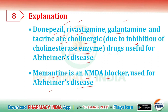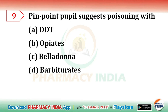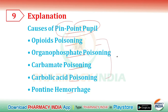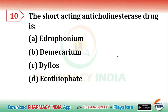Donepezil, rivastigmine, and galantamine are cholinergic drugs. Next question: pinpoint pupil suggests poisoning with — DDT, opiates, belladonna, or barbiturates? The correct answer is opiates. Causes of pinpoint pupil include opiate poisoning, organophosphate poisoning, carbamate poisoning, carbolic acid poisoning, and pontine hemorrhage. The next question: which is the short-acting anticholinesterase drug? The correct answer is edrophonium.